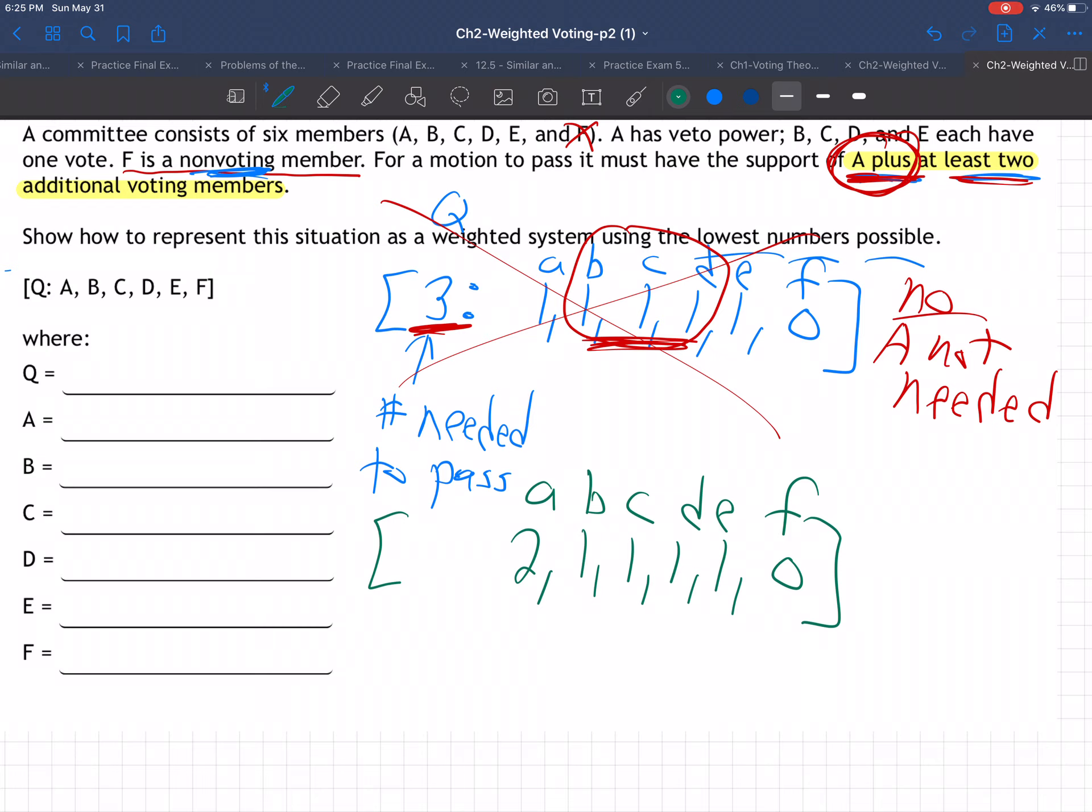Now, what should I put here as the quota? What does it take? It takes A and two other players, right? A plus two others. So that would be four votes. How about this situation? Does this look good?